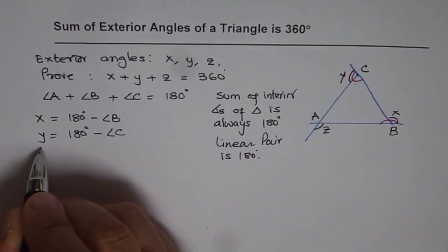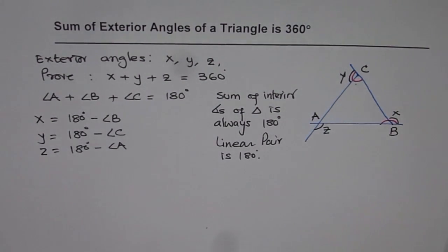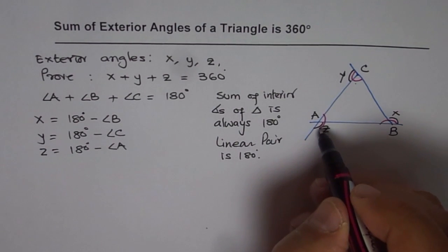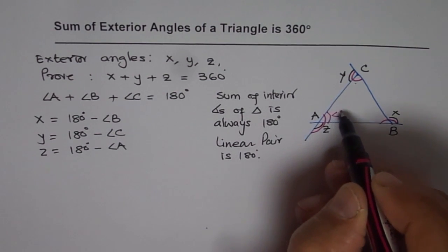And z is equal to 180 degrees minus angle A. Correct? So that is a straight line making 180 degrees. And this angle is angle A for us.